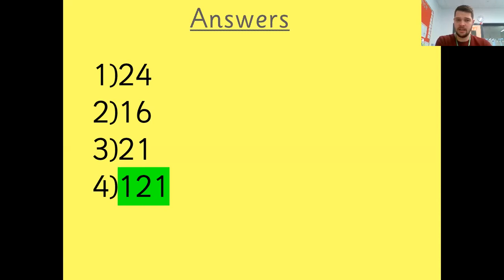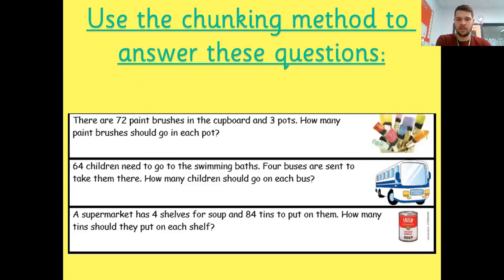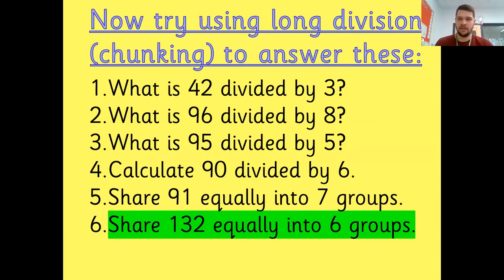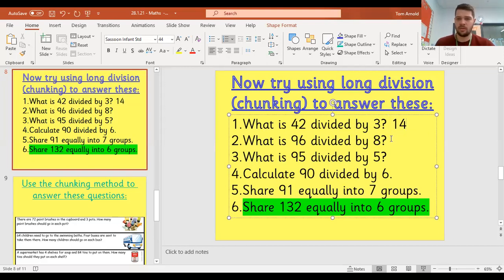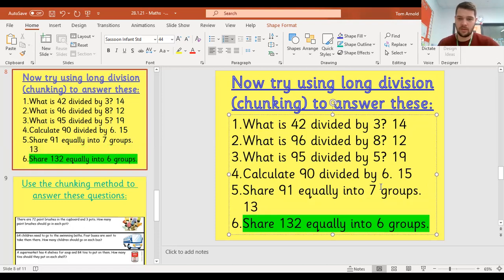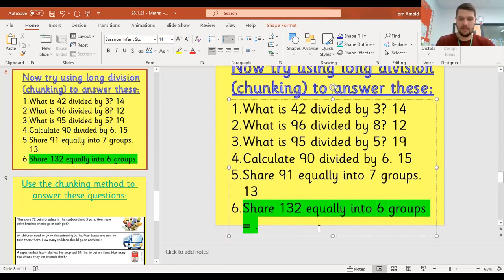24, 16, 21, 121. They are the answers for your word problems. And the answers for these ones here I will put in. 42 divided by 3 is 14. 96 divided by 8 is 12. 95 divided by 5 is 19. 90 divided by 6 is 15. 91 divided by 7 should be, sorry, 13.